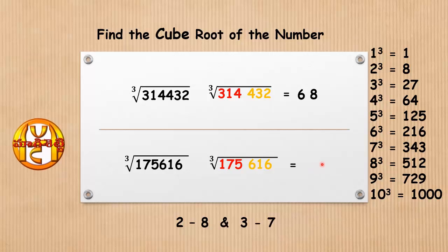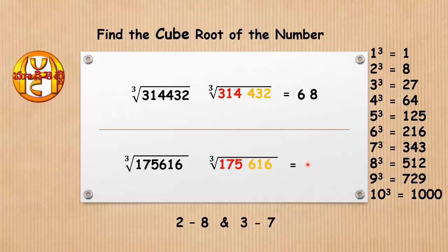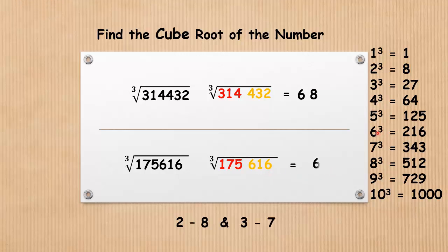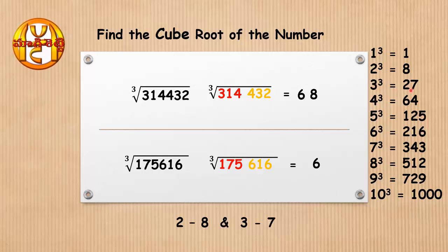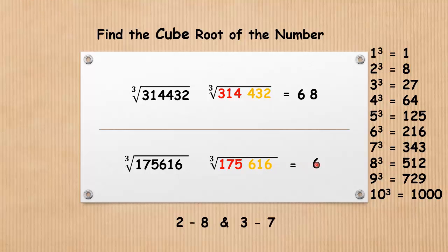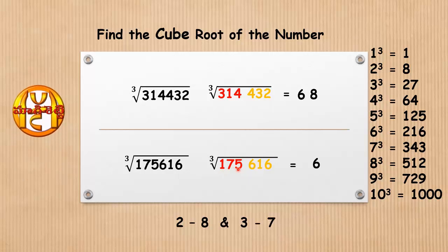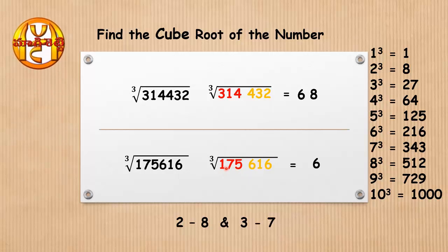In the first group, the units place digit is 6. Since 6 cube has 6 itself as its units place, the answer contains 6 in its units digit. For reference, if we had 5 we get 5, and if we had 3 we would take its conjugate pair 7. Here we have 6, so the first digit of the cube root is 6.